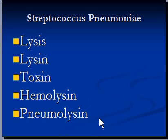Pneumolysin is another toxin which is produced by Streptococcus pneumoniae. It creates holes in host cells to release the cell contents, and thus causes lysis or death of the host cell.